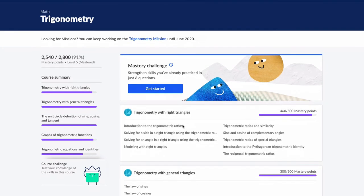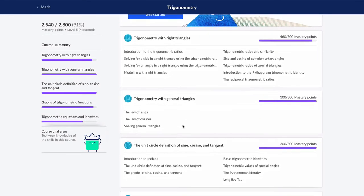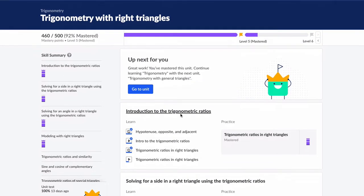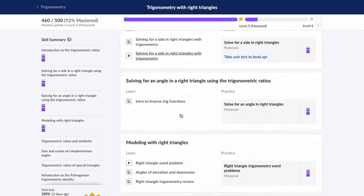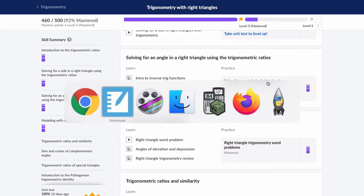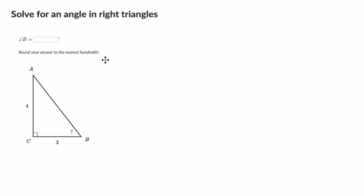Hello and welcome. In this video we're looking at Khan Academy Trigonometry with right triangles and we're looking at the third exercise which is solve for an angle in right triangles. So what we'll do is we'll do four examples and I'll give you a little bit of background and then hopefully you'll know what to do from there.